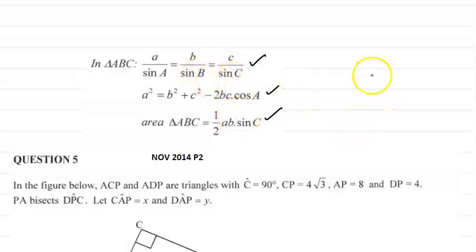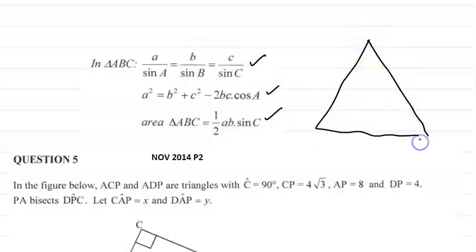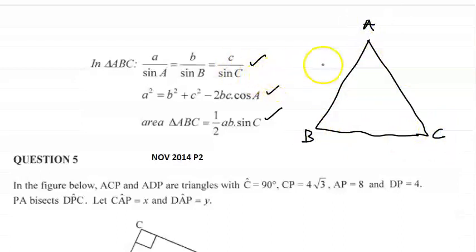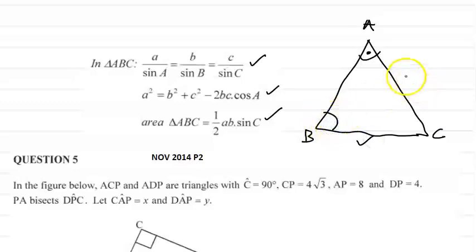Let me run through each of these rules quickly. If I have a non-right angle triangle, let's call it triangle ABC. To use the sine rule, the conditions that must exist are: I must be given an angle and its opposite side, and either another angle — in which case I can find the side opposite that angle — or another side, in which case I can find the angle opposite that side.